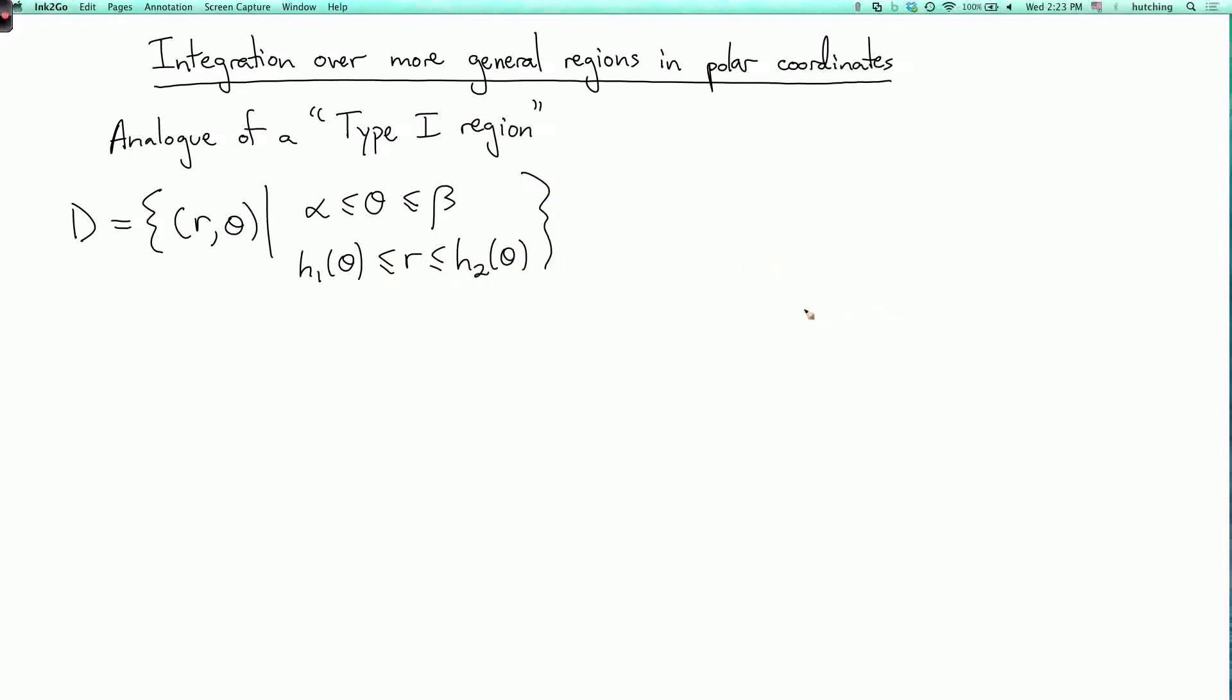So the picture of this, here's the line where theta equals alpha, here's a line where theta equals beta, and then we're gonna have two curves of varying radius. So this outer curve is r equals h2 of theta, this inner curve is r equals h1 of theta, and this region in the middle is our region D.